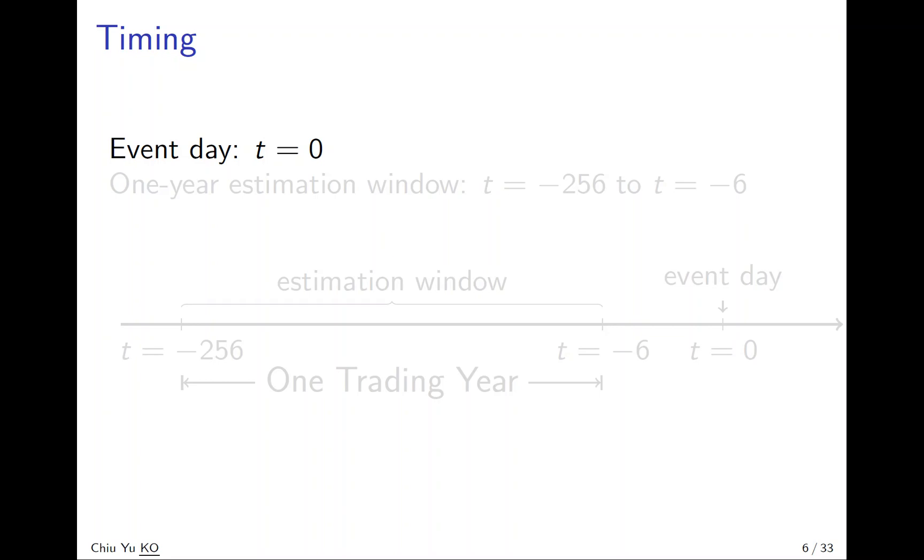Usually we have a one-year estimation window before to estimate the normal return. We denote that t equals negative 256 to negative 6, so it's six days before the event to one year before the event.